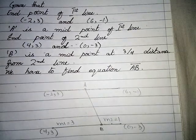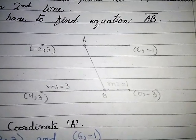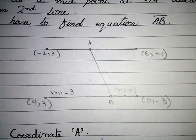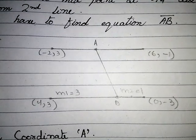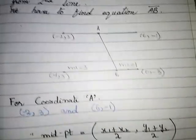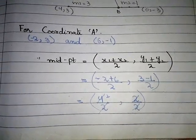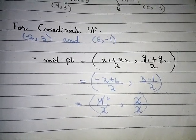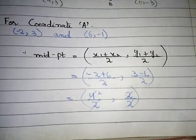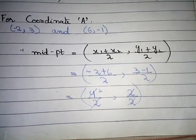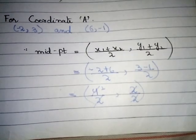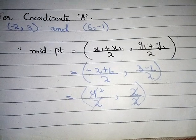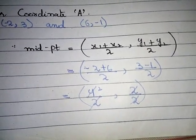We have to find equation of AB. Now look at the diagram — this diagram is drawn according to the question. Firstly we find coordinate A. For coordinate A, the points are (-2, 3) and (6, -1). We apply the midpoint formula: midpoint = (x1 + x2)/2 and (y1 + y2)/2. We put the values of x1, x2, y1, y2.